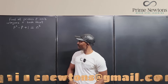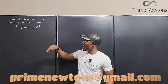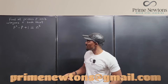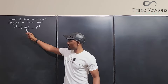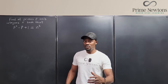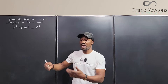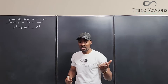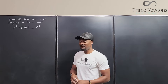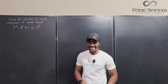Welcome to another video. I have a number theory problem here: find all primes p and integers n such that p squared minus p plus one equals n cubed — find the combination of a prime number and a natural number satisfying this. In the end we're going to get just one prime number and one corresponding natural number. Let's get into it.